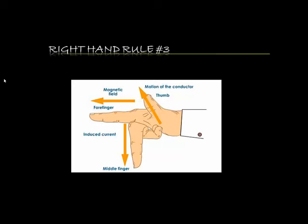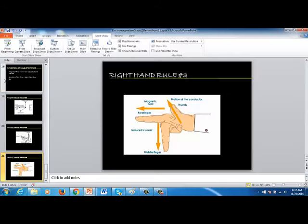Thumb is the conventional current. Your forefinger is the magnetic field, south seeking. And then your middle finger is the direction of the magnetic force. So that's a quick review of your right-hand rules. So come to Monday with the online quiz done, and this review completed.